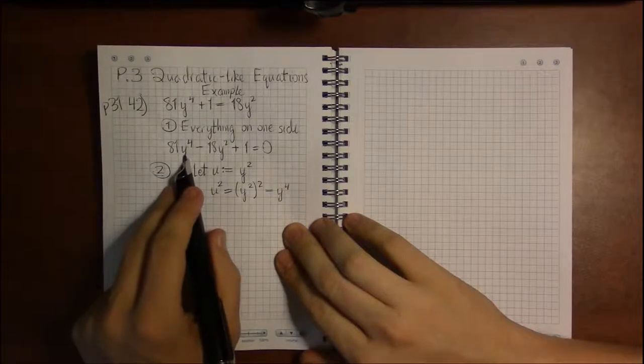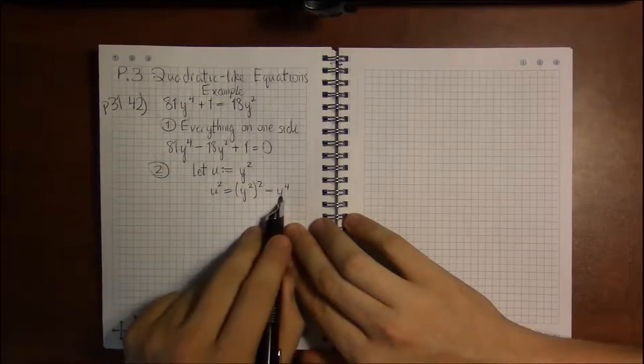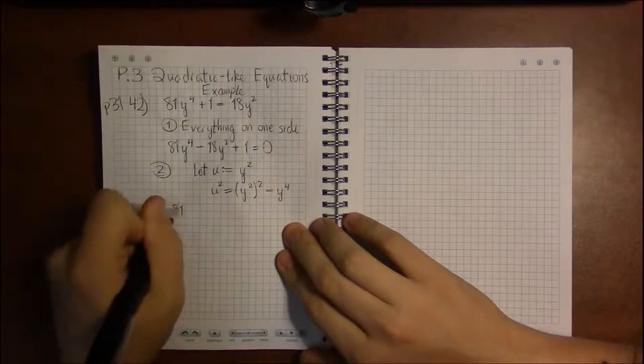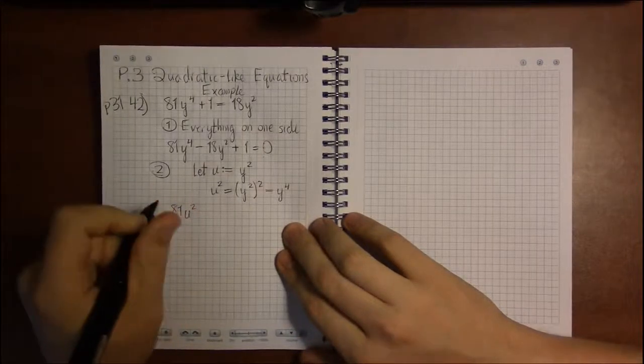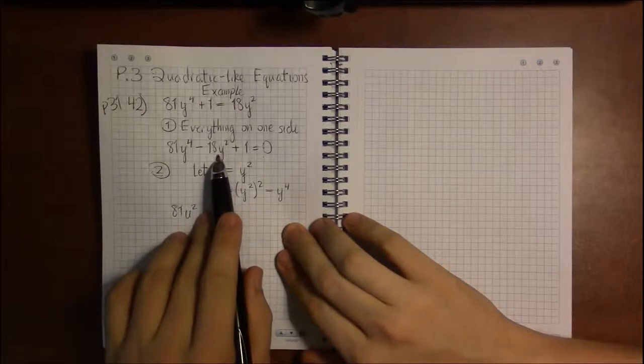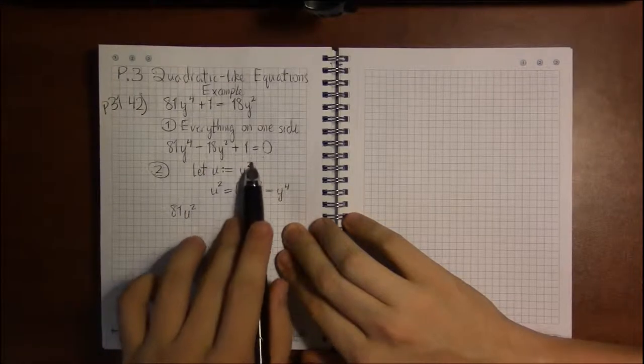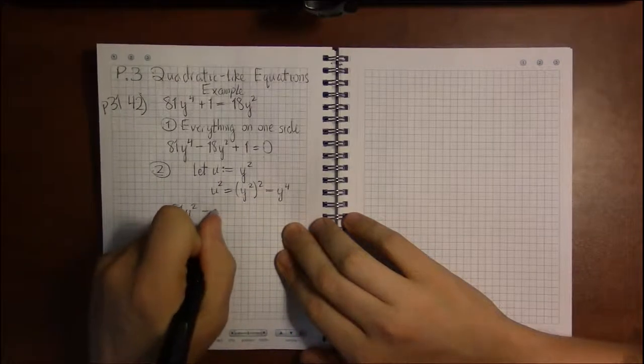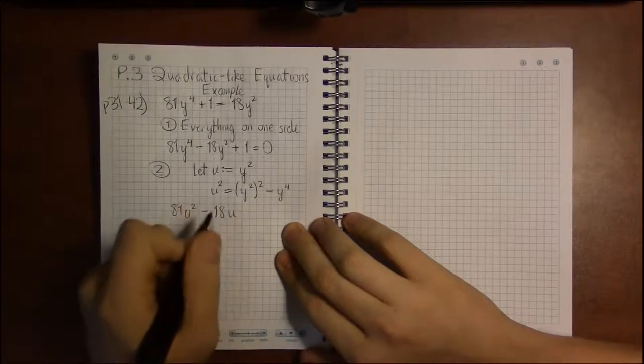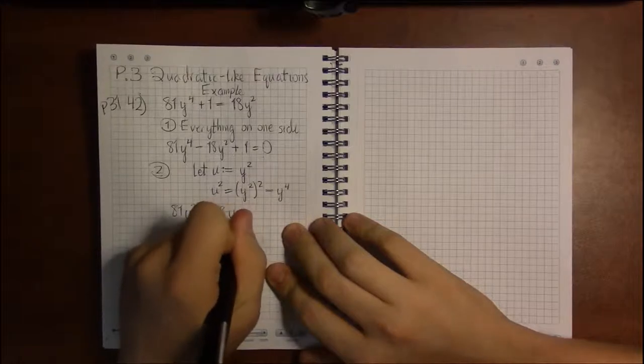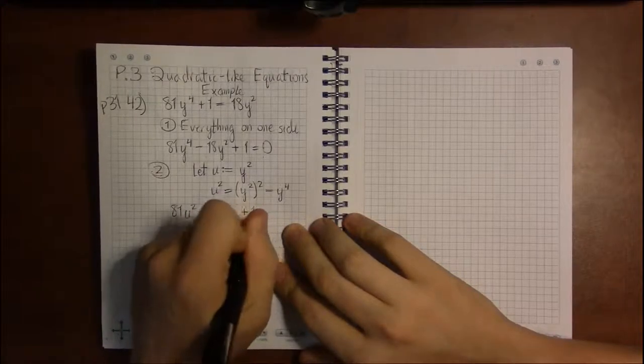So 81y to the fourth. I don't want y's. So I can replace it with u squared. 81u squared minus 18y squared. Don't want any y's. But I know y squared can be replaced with u. So this becomes minus 18u. Plus 1 equals 0. All those are fine. No y's in the rest of this.